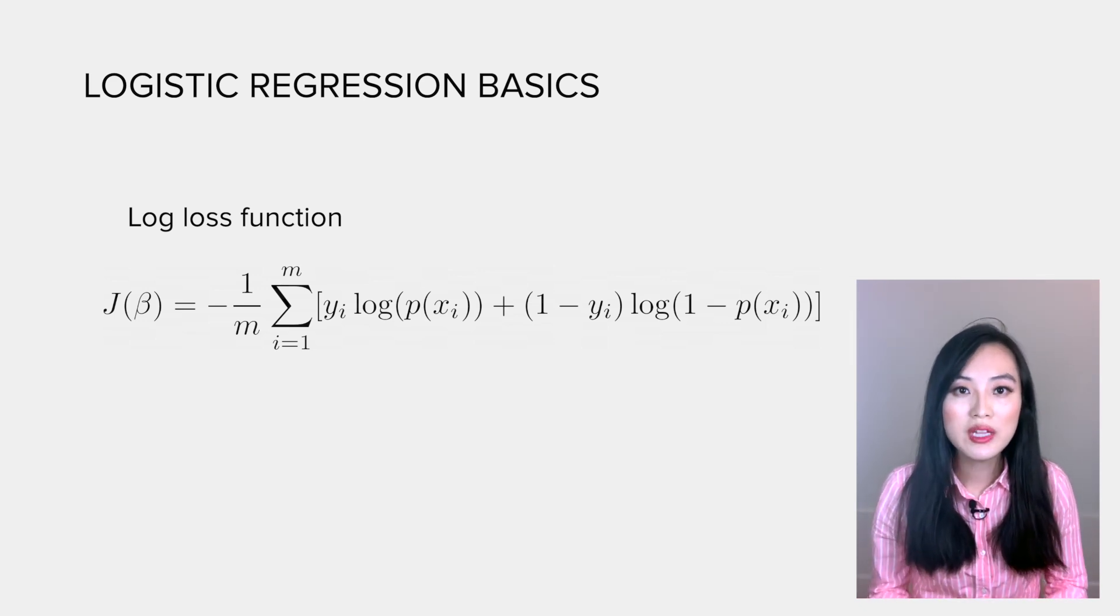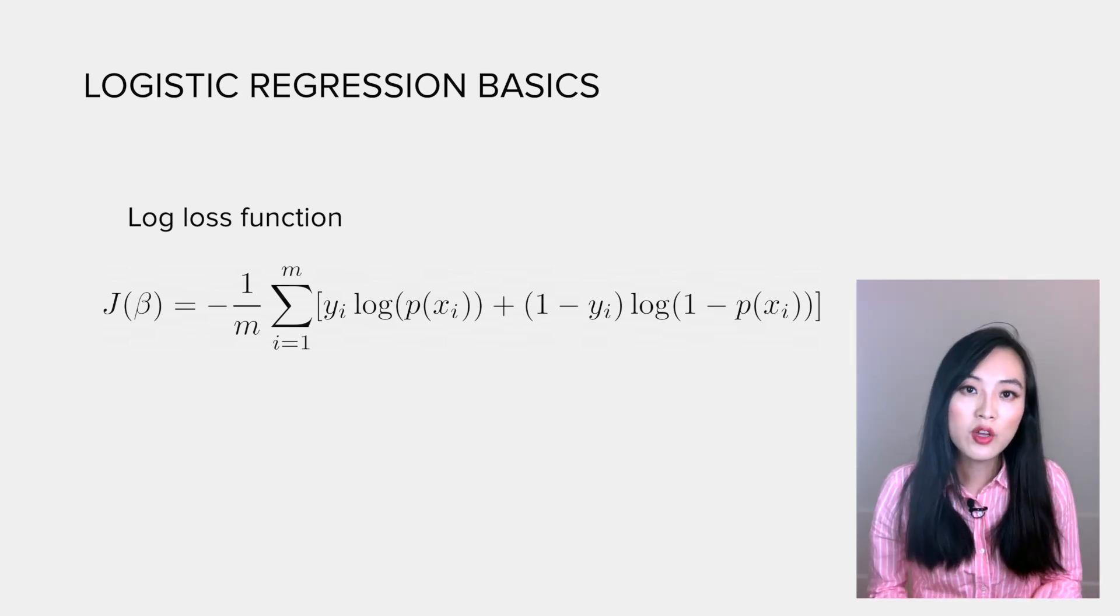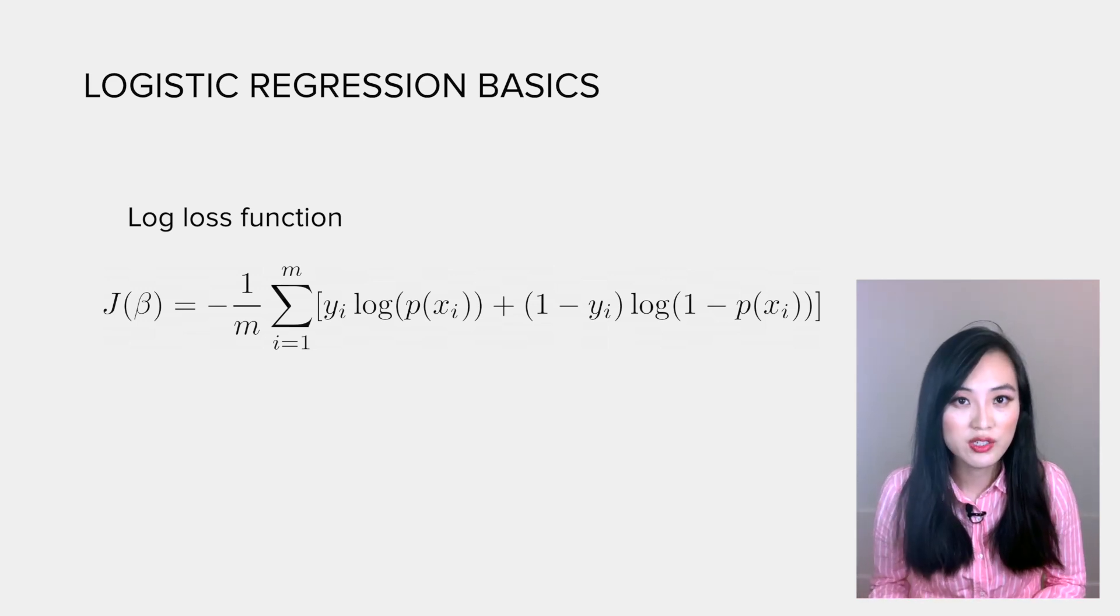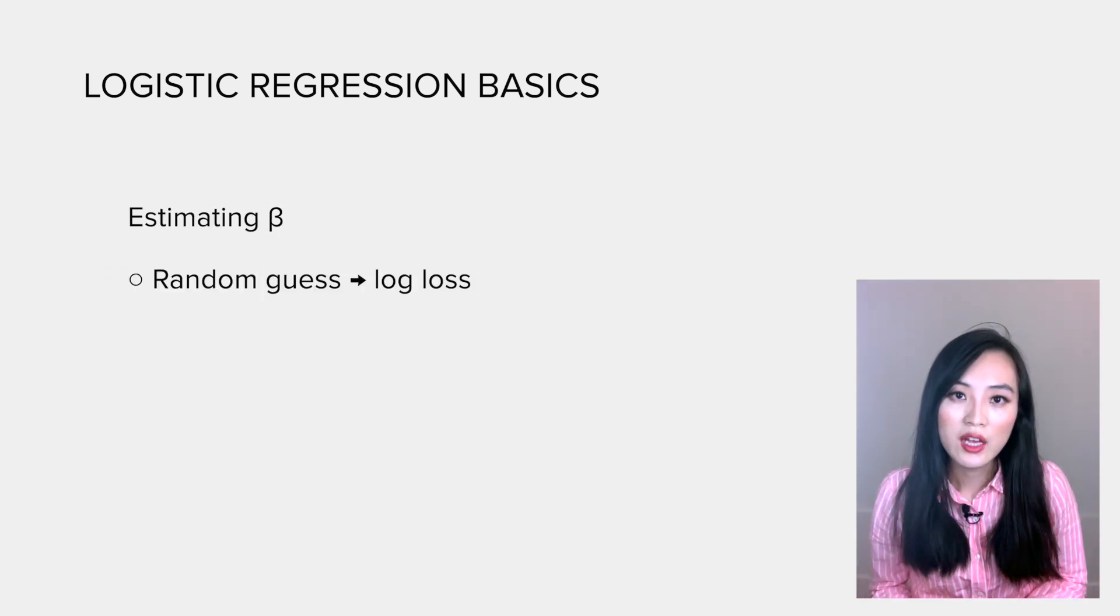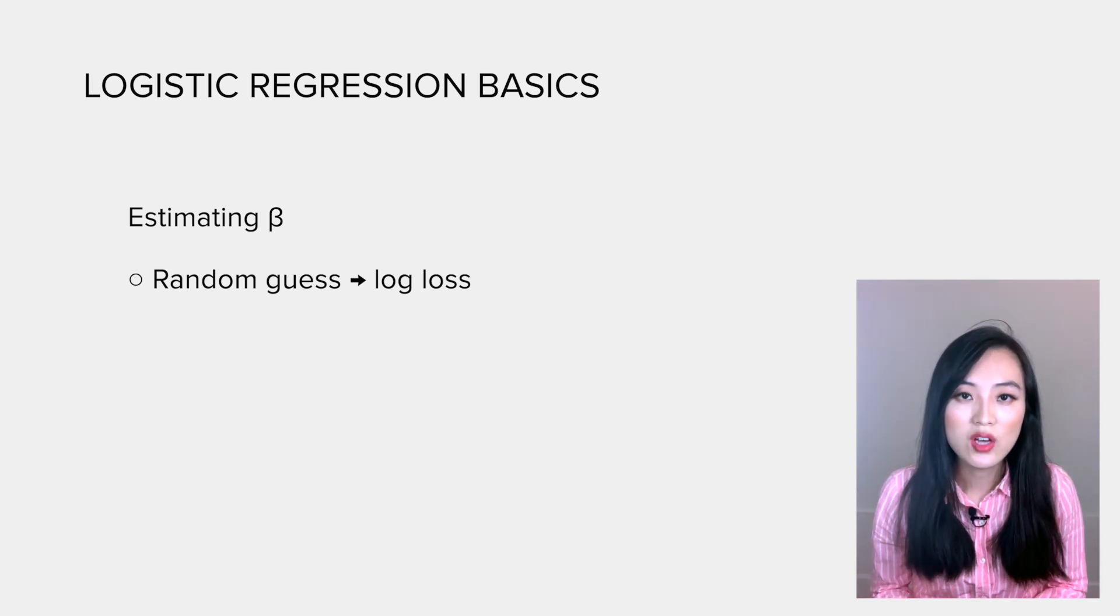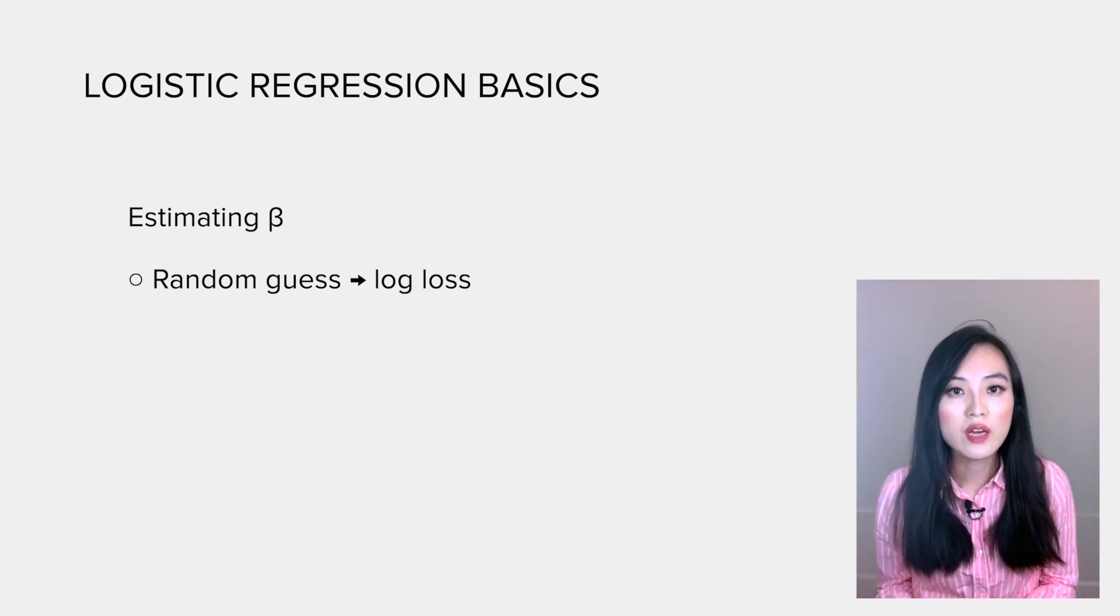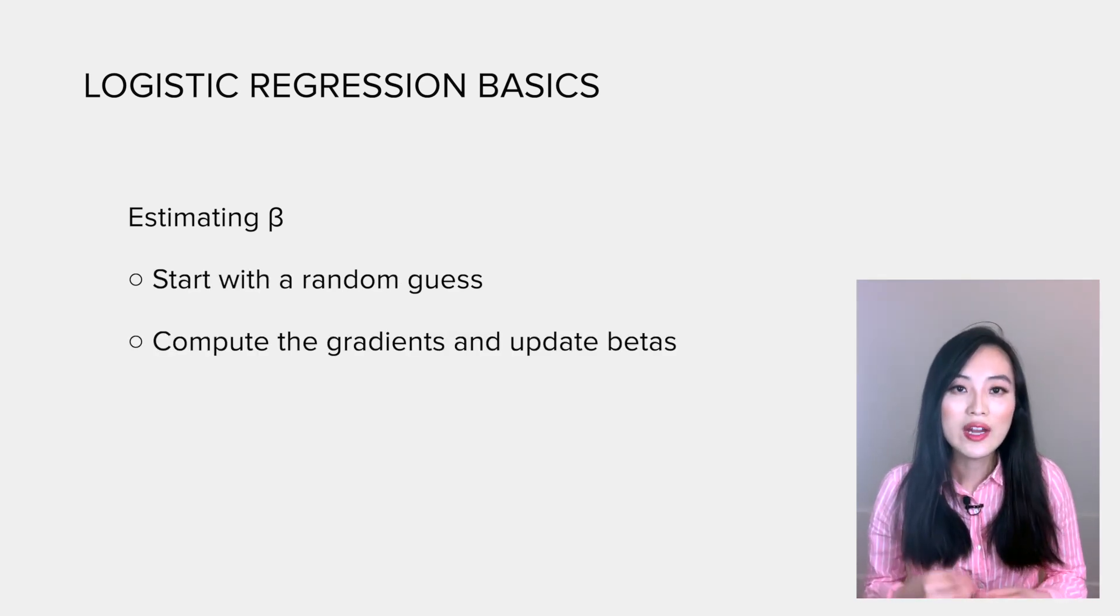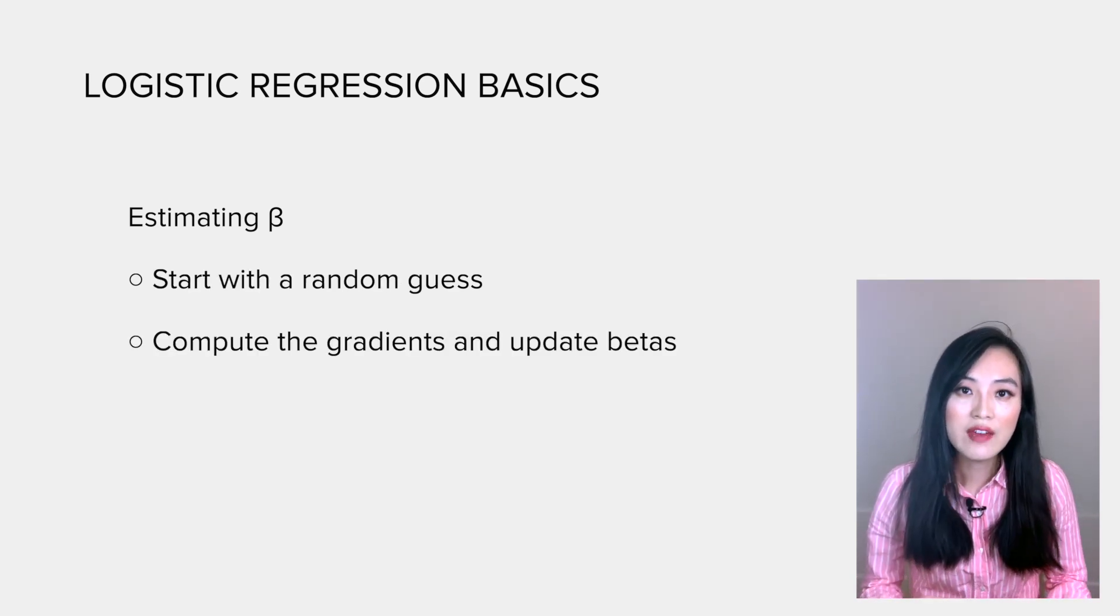Then we want to obtain betas to minimize the log loss. Typically, we use gradient descent to reduce the log loss over multiple iterations. Intuitively speaking, we start with a random guess of betas. Then we compute the log loss associated with them. Next, we get the gradients at each parameter, and they will be used to update the values of betas.